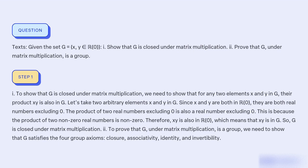Part 2: To prove that G, under matrix multiplication, is a group, we need to show that G satisfies the four group axioms: closure, associativity, identity, and invertibility.